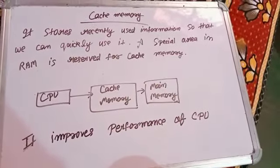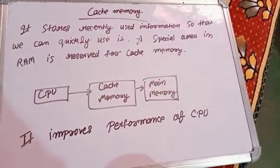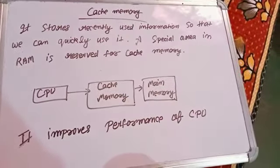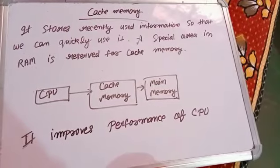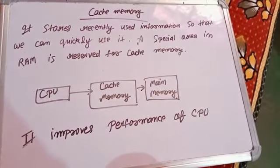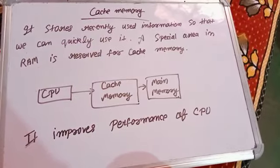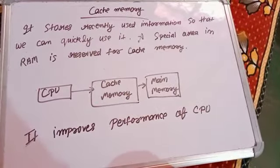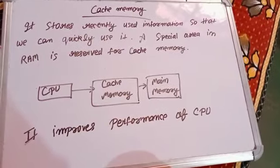The diagram shows the CPU, cache memory, and then main memory. Cache memory improves the performance of the CPU. Whatever we use to search — for example, a Google search — that text or file has been stored in our cache memory. So when we clean it, then it needs to connect to the network again.